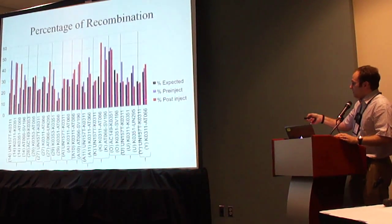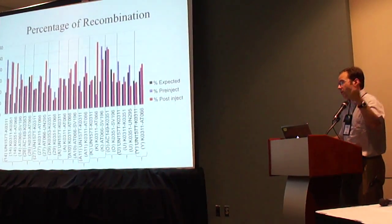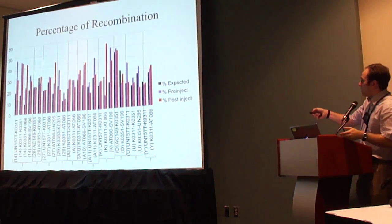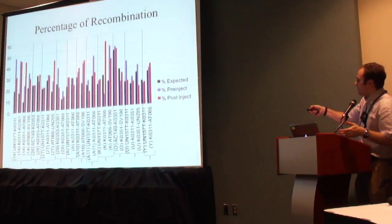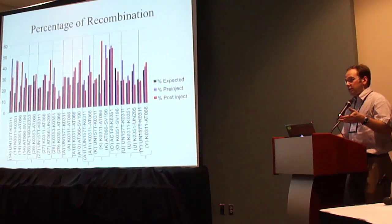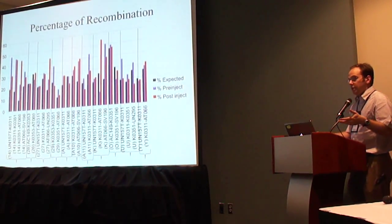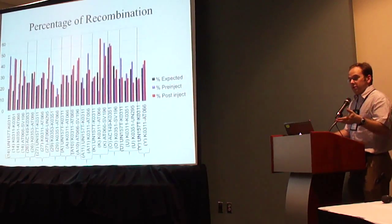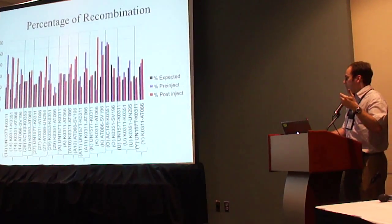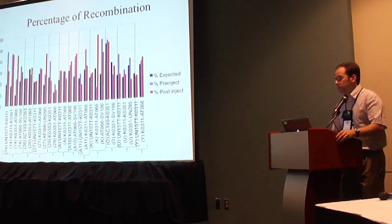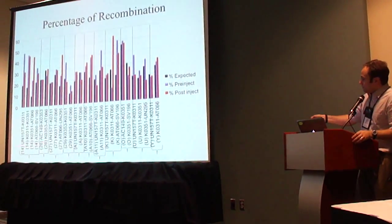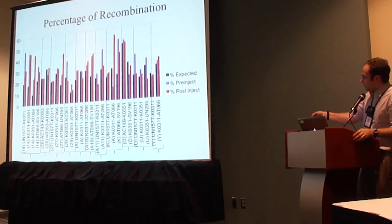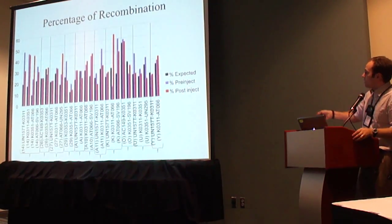To illustrate the results: the black bars represent the expected value from the third-generation recombination map, the purple bars the experimentally obtained recombination rates in the pre-injection sample set, and the red bars the post-injection sample set, for each colony and each interval tested. There is no consistent pattern.